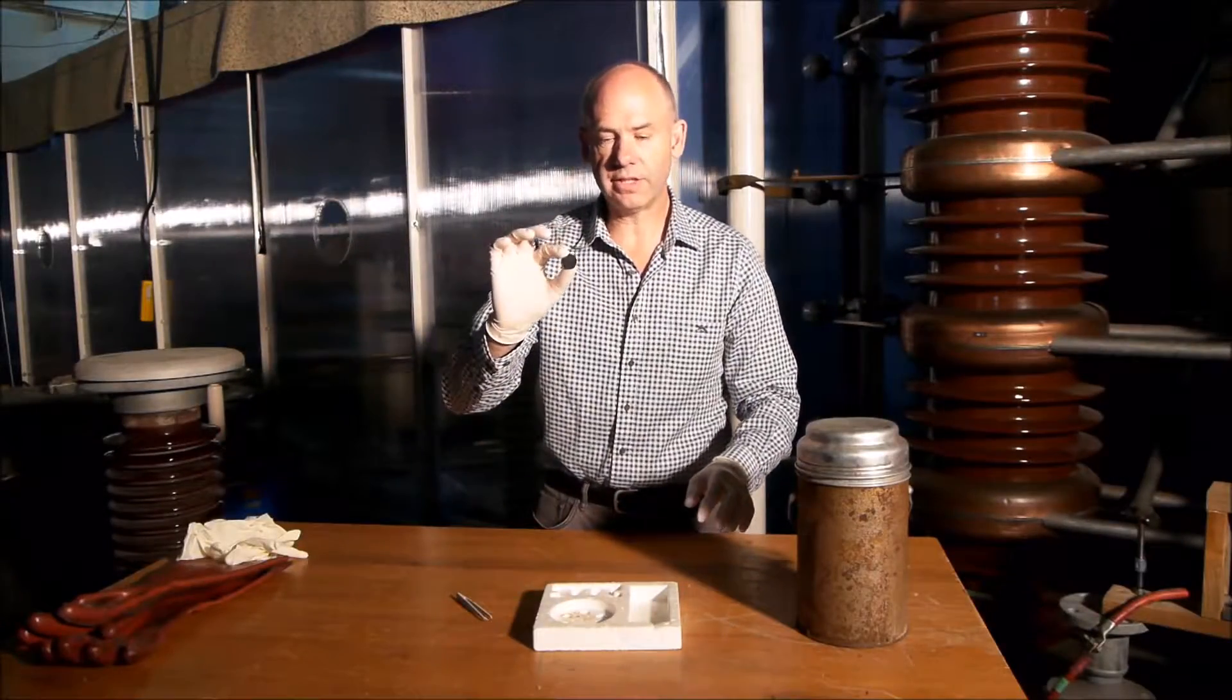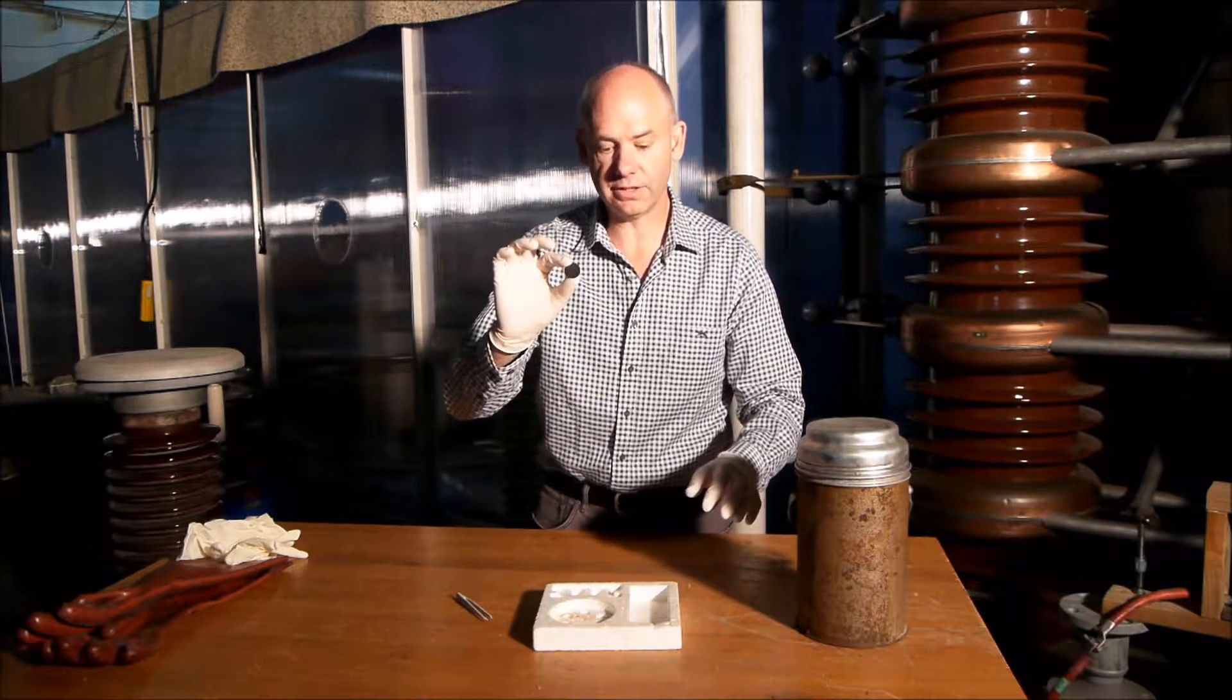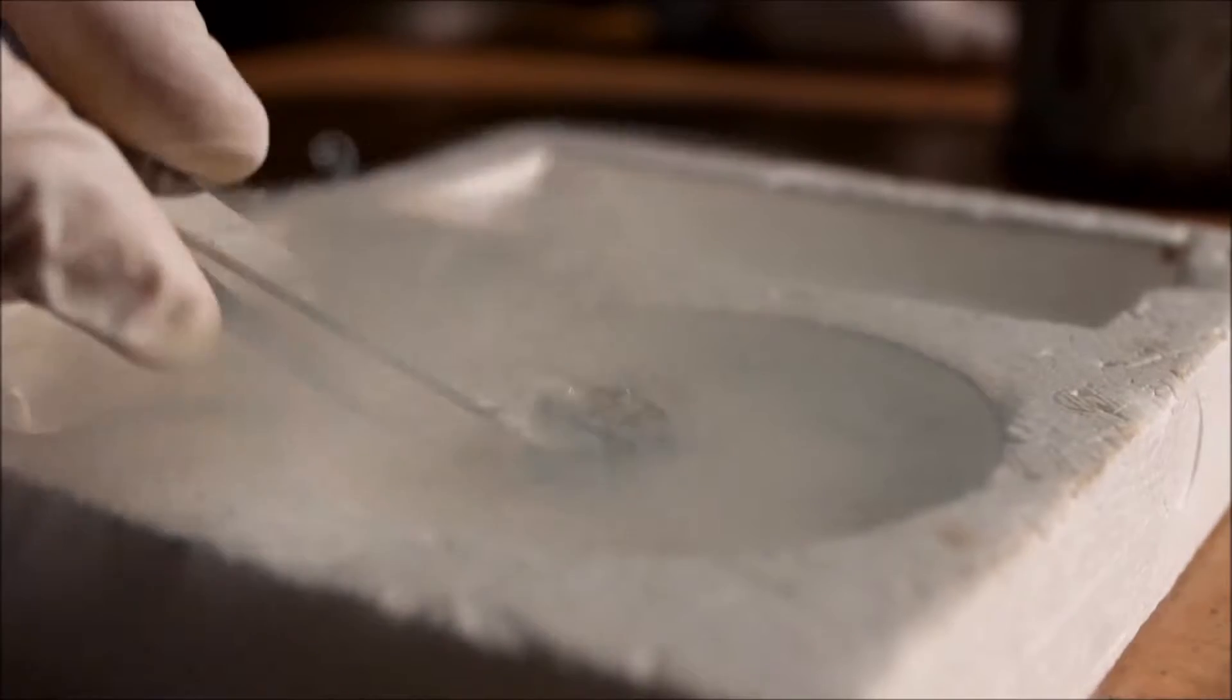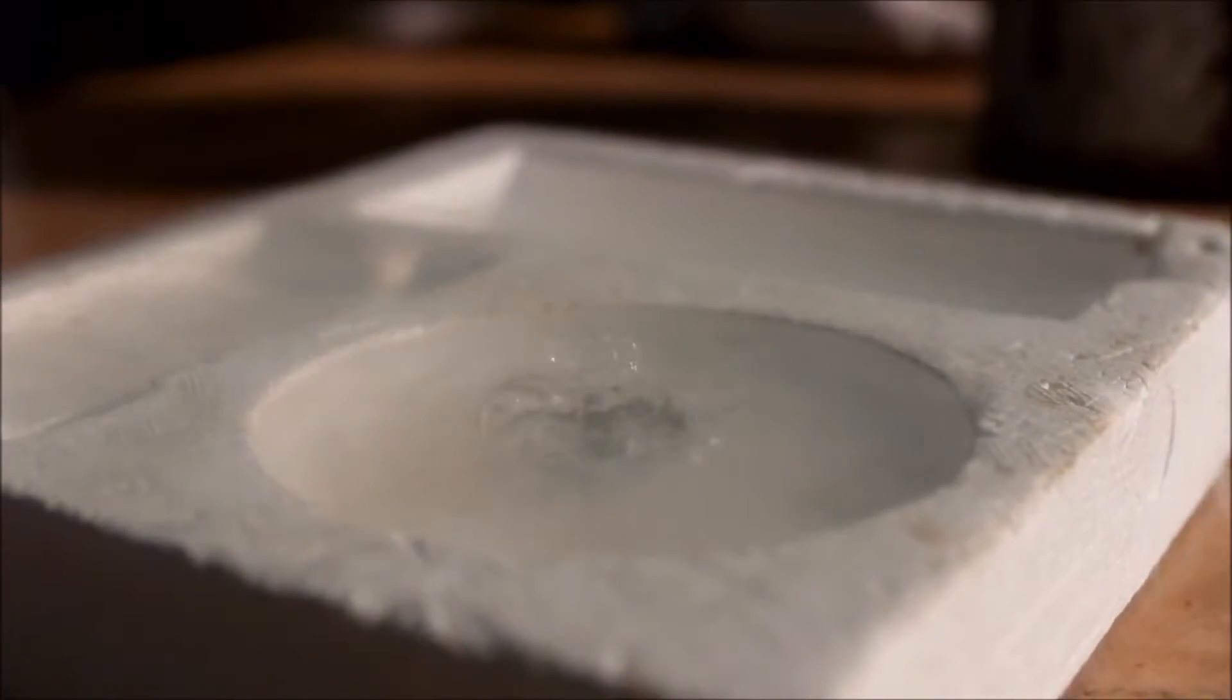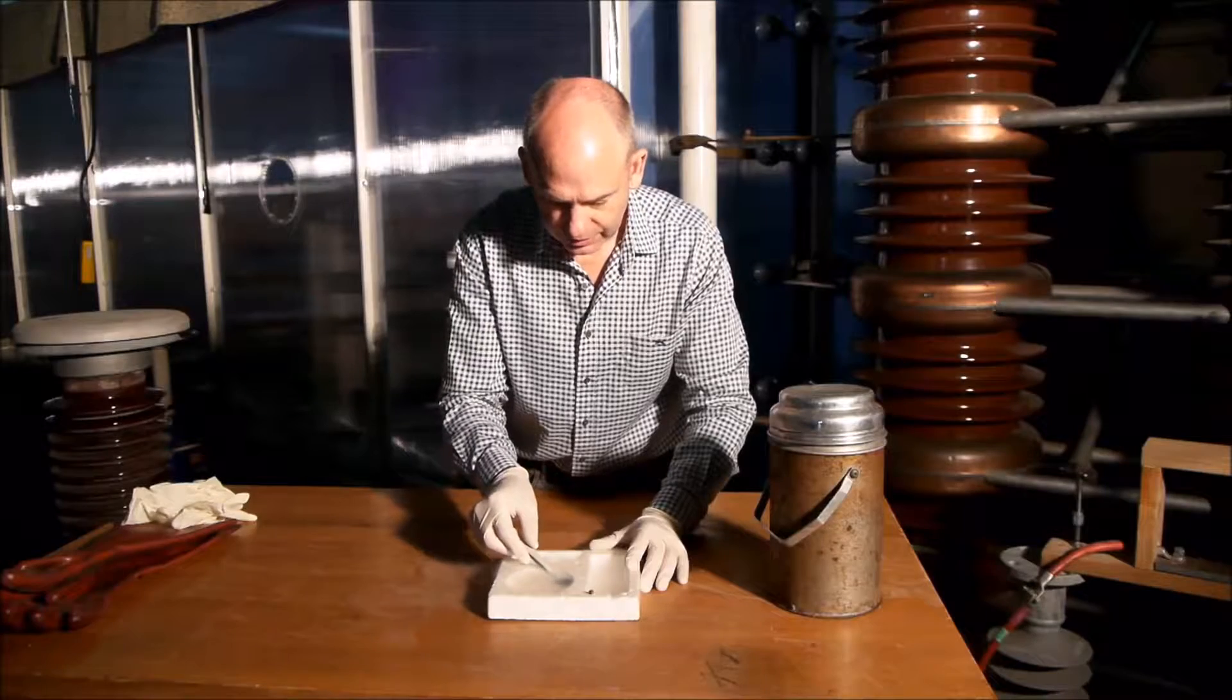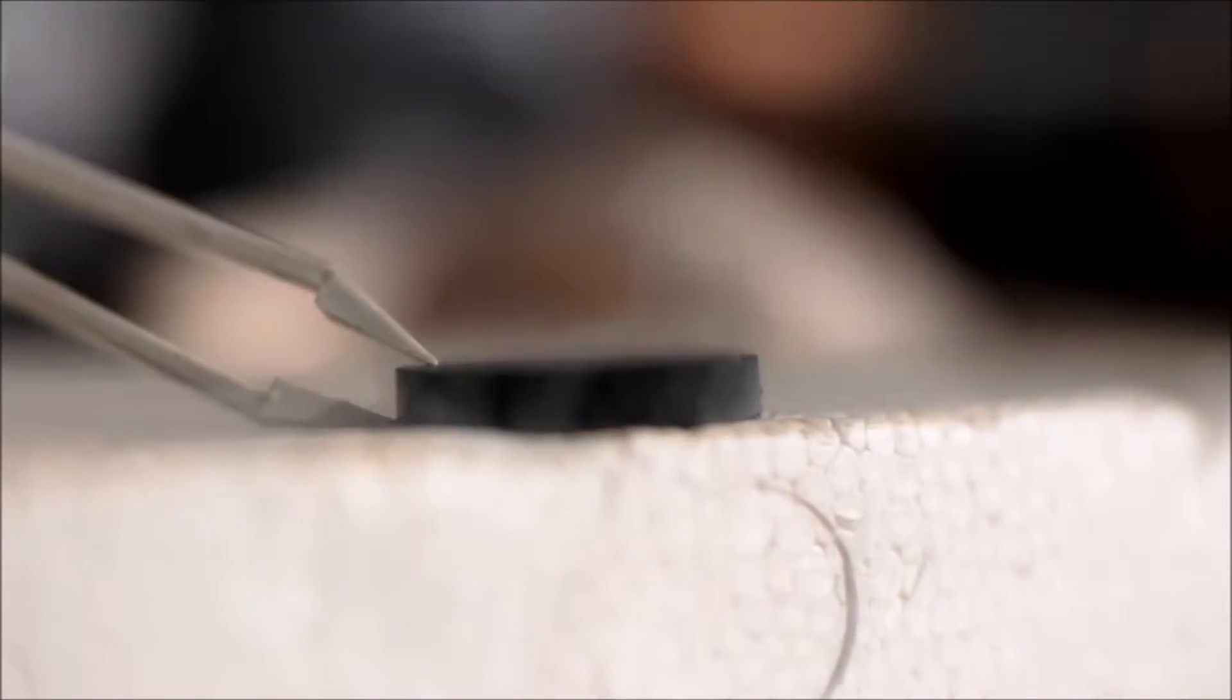When superconductors like this are cooled down to low temperatures, they have zero resistance. So, once the liquid nitrogen stops boiling, the superconductor will be at a temperature of approximately minus 200 degrees centigrade.